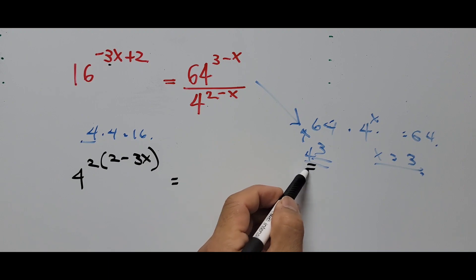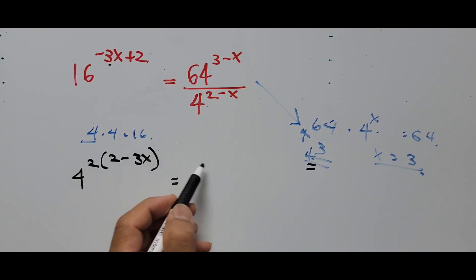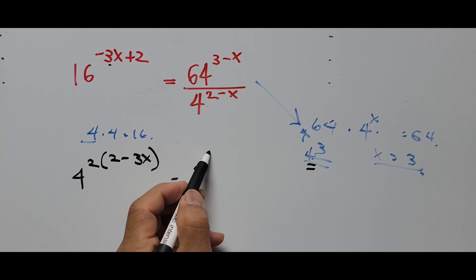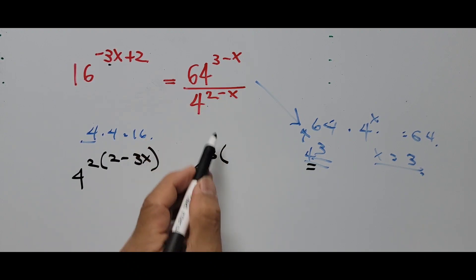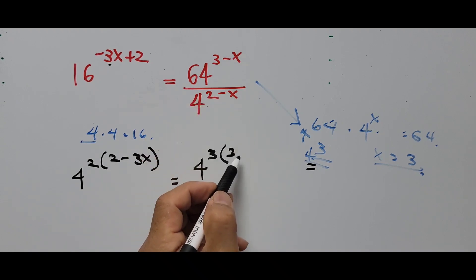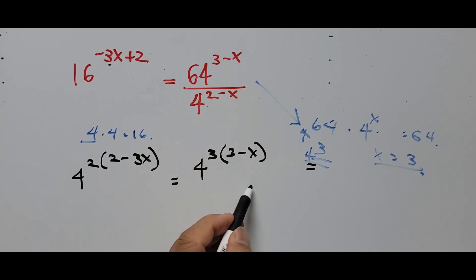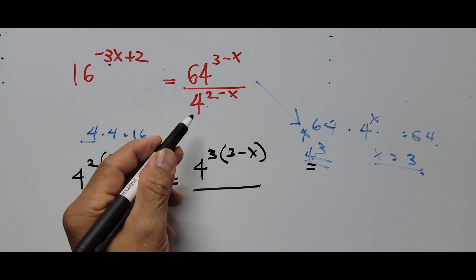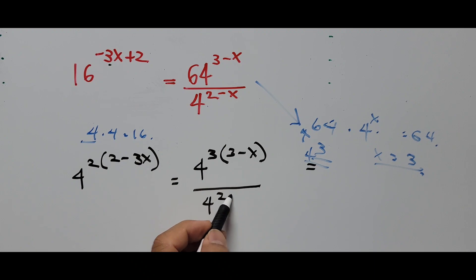On the right side, 64 equals 4 to the third power, so the numerator becomes 4 raised to the third power, multiplied by the exponent 3 minus x. The denominator remains 4 raised to 2 minus x.